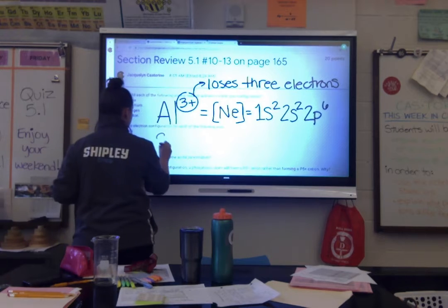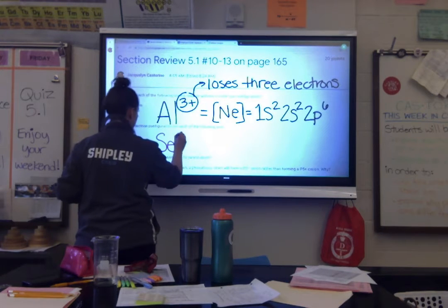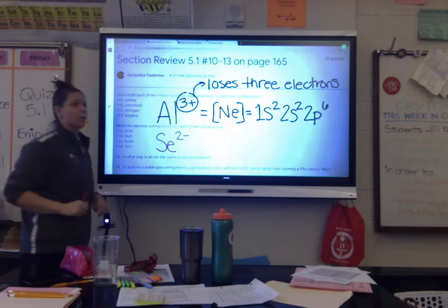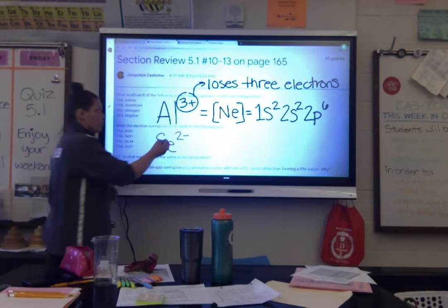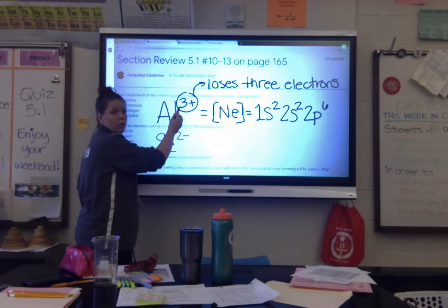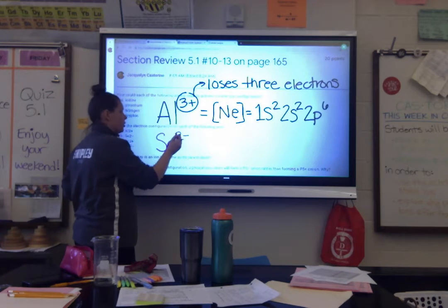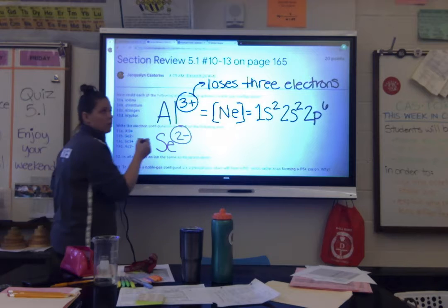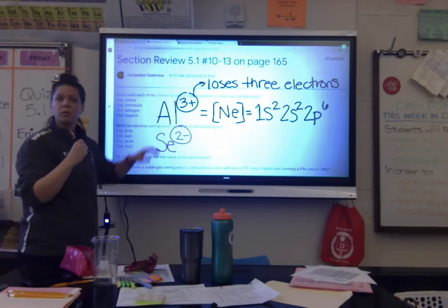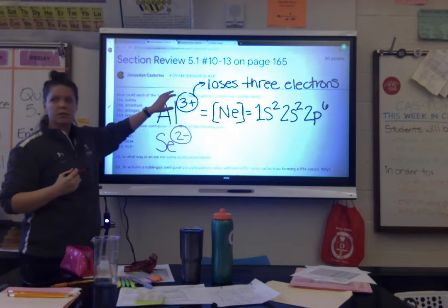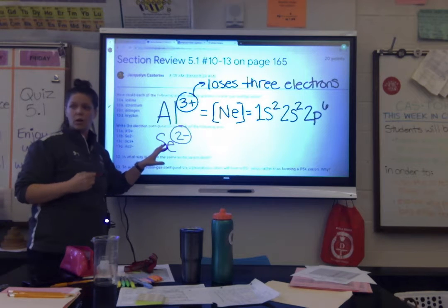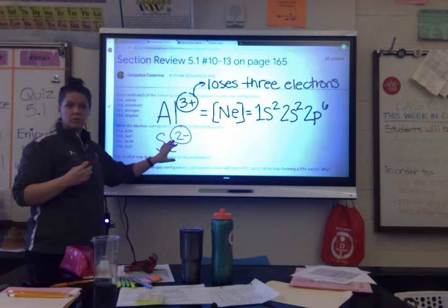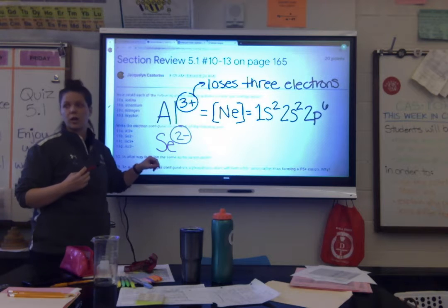Then what's next? We're going to the p block. Does the p block follow the D block rule or the S block rule? The S block rule. So we write 4p6. And that takes us right to krypton. That's how you'll solve 11C and 11D as well.